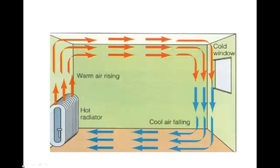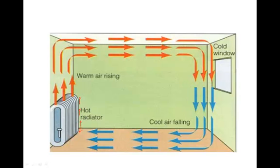We'll move on to convection. This is how heat travels in gases and liquids. In this situation, we've got a hot radiator and a room being warmed up by it. To start with, we've got cold air next to the radiator. As those air particles start to get warmed up by the radiator, they will rise — we all know that hot air rises. So the hot air next to the radiator will rise up to the ceiling. This will be replaced by cold air.